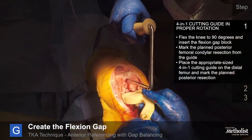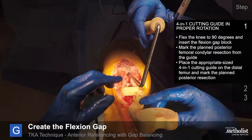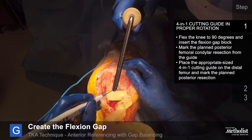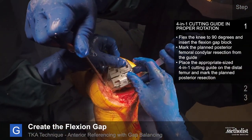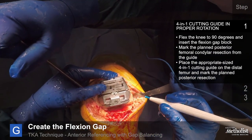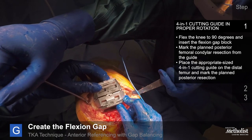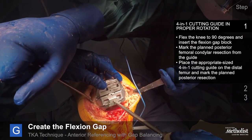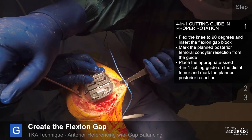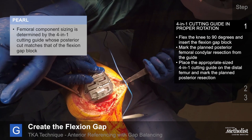Flex the knee to 90 degrees and insert the flexion gap block. Mark the planned posterior femoral condylar resection, then place the appropriate sized 4-in-1 cutting guide on the distal femur and mark the planned posterior resection line, comparing it to the line made previously with the spacer block. The femoral rotation has previously been determined by the anterior rotational cut on the femur; at this point, the anterior cut should be parallel to the tibial cut. Small corrections can easily be made to the femoral rotation by slight angular changes of the 4-in-1 cutting guide. Femoral component sizing is determined by the 4-in-1 cutting guide, and the posterior cut matches that of the flexion gap block.